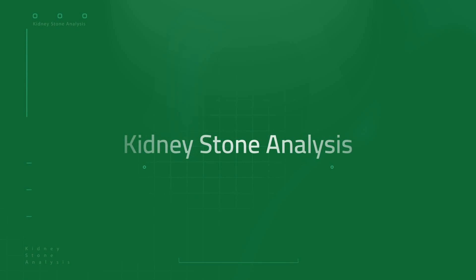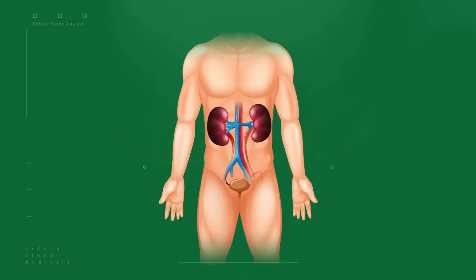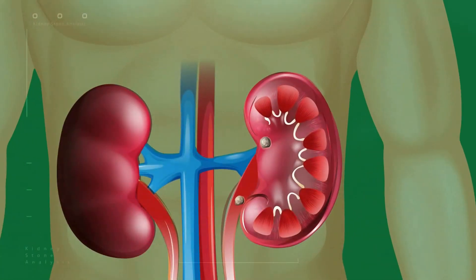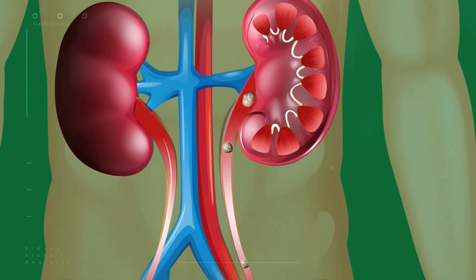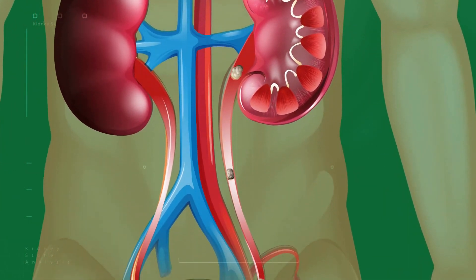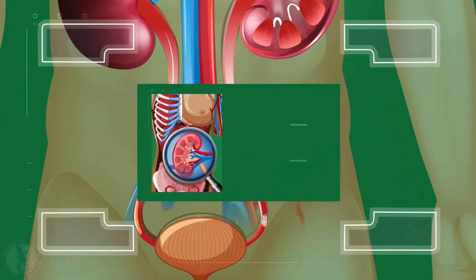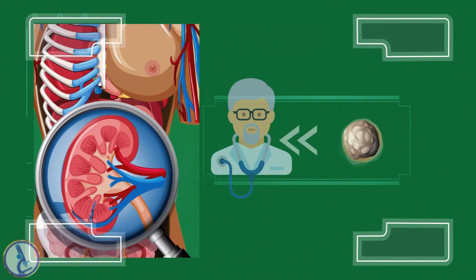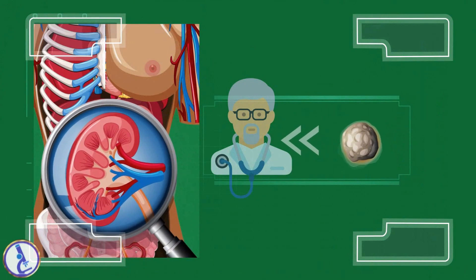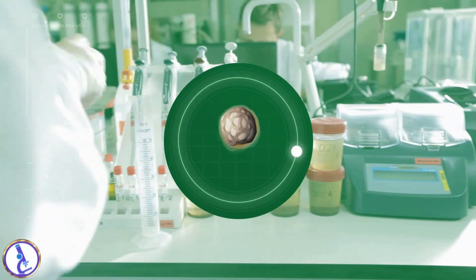Kidney stone analysis: this test is performed to evaluate the composition of a kidney stone. It is ordered when a stone has passed through or has been removed from your urinary tract, in order to determine the cause of its formation and to guide treatment. The sample required is a stone or stones filtered from your urine or surgically removed from your urinary tract by a health care practitioner.